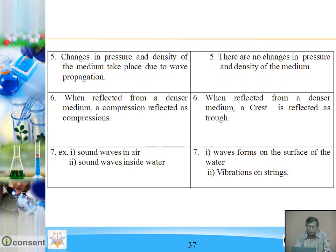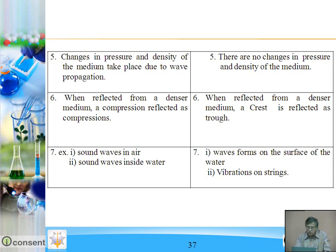In longitudinal waves, changes in pressure and density of the medium take place due to wave propagation. In transverse waves there are no changes in pressure and density. When reflected from a denser medium, a compression in longitudinal waves is reflected as a compression, whereas a crest in transverse waves is reflected as a trough. Examples of longitudinal waves: sound waves in air and water. Examples of transverse waves: waves on the surface of water, vibrations of strings.